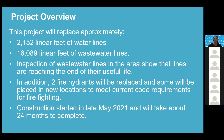Thank you, Ms. Emily. To give a brief project overview: this project will replace approximately 2,152 linear feet of water lines and 16,089 linear feet of wastewater lines. Inspection of wastewater lines in the area has shown they are reaching the end of their useful life - that's the reason for completing this project. In addition, two fire hydrants will be replaced and some placed in new locations to meet current code requirements for firefighting. Construction started in late May 2021, and the project will take about 24 months to complete.